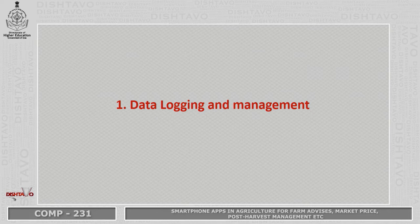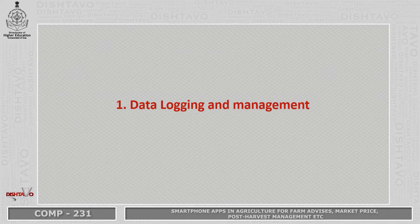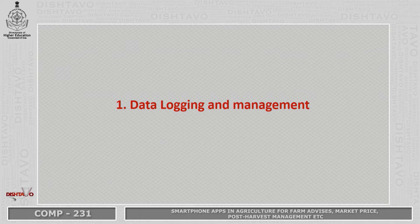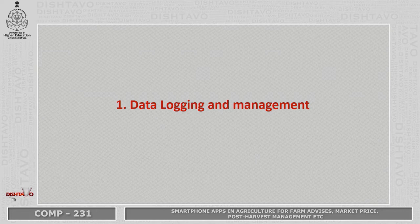Let's try to understand what are different data logging and management applications. These are applications where you need to put in the desired information the application asks for, and the result will be given to the farmer — what operation to carry out, to what extent, and with what quantity. For example, if the fertilizer dose recommended for rice is 150-50 of NPK, and the farmer inputs their land size and the mixed fertilizer grade they have, the application will calculate by itself and provide the exact amount of mixed fertilizer required for the farmer's field at the NPK level.